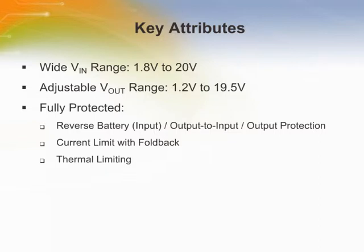The LT1965's most important market differentiators are its wide input voltage range of 1.8 to 20 V and an adjustable output from 1.2 to 19.5 V. It also features internal protection circuitry including reverse battery protection, reverse current protection, current limiting with foldback, and thermal limiting.